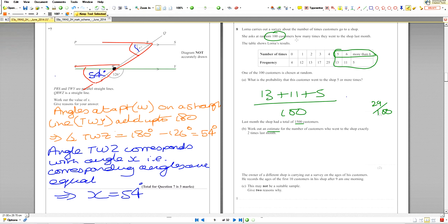So exactly two times last month - how many customers went exactly two times? We have 1500 customers times 13 over 100. That's the probability of it happening, 13 out of each hundred. So we multiply the number of customers by the probability. That's how we work out this one.